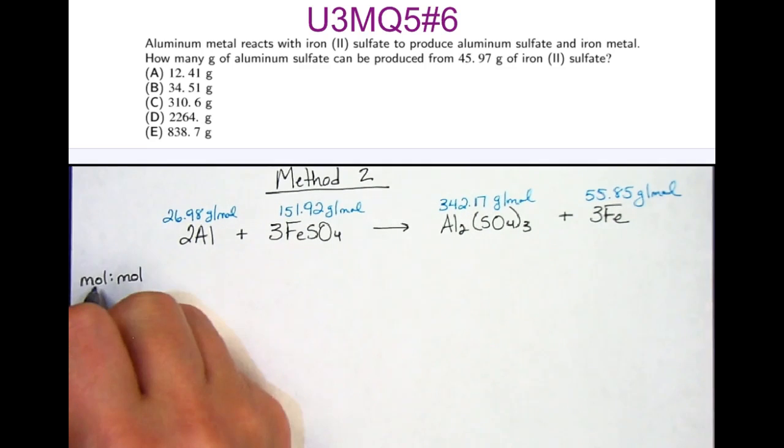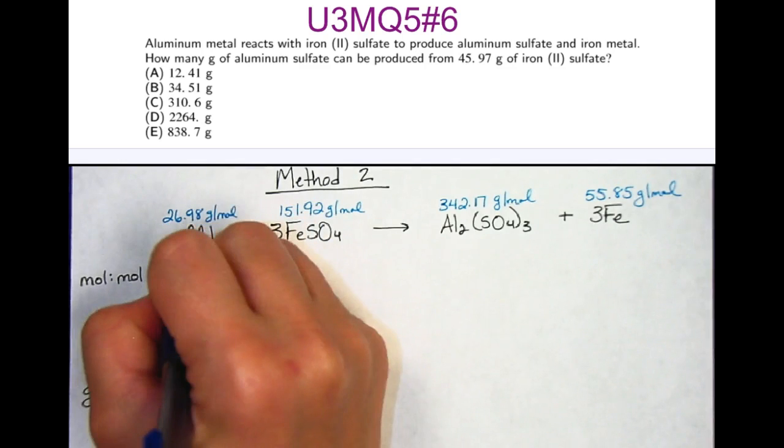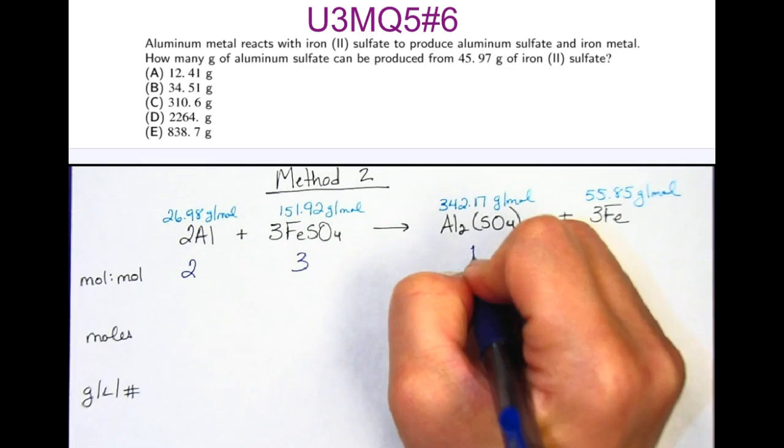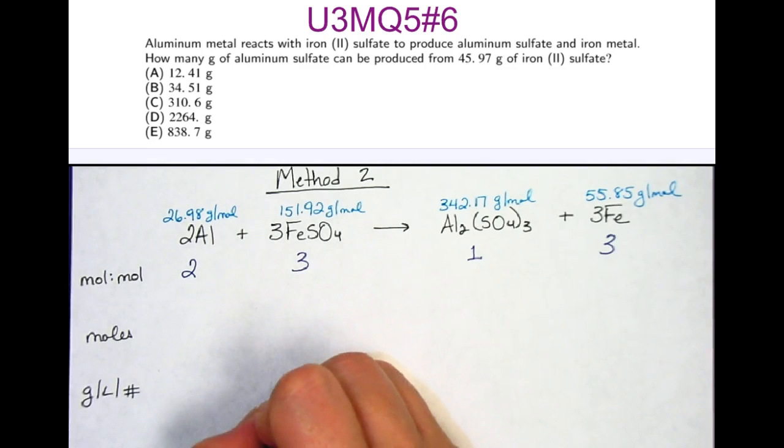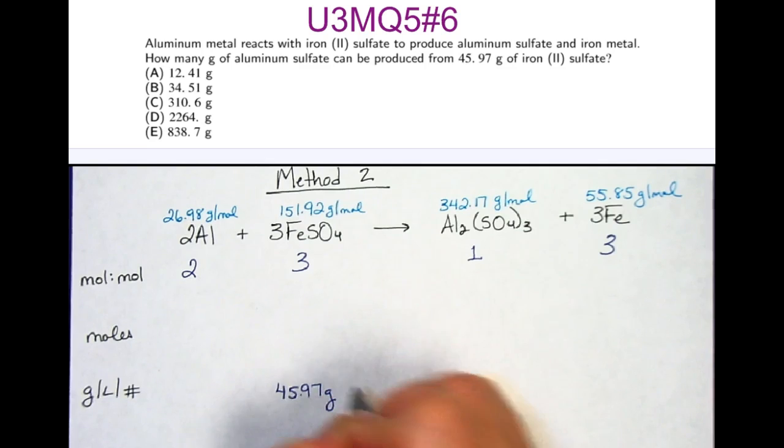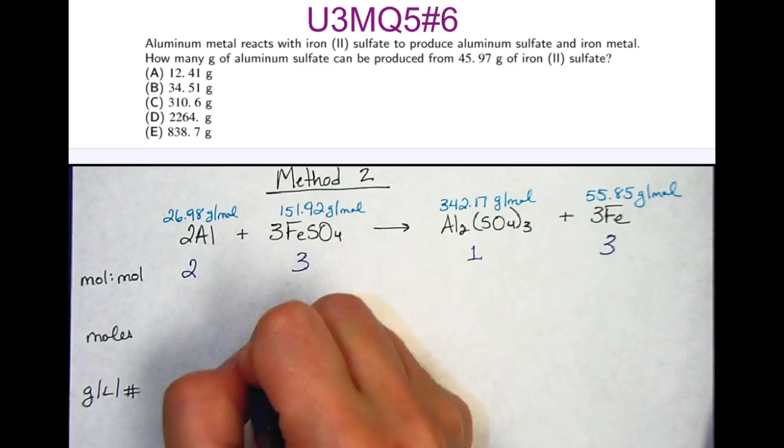Alright, now we'll fill out the chart. The mole ratio of everything in this equation is 2 to 3 to 1 to 3. We are given 45.97 grams of iron sulfate, and so from this piece of information, I can determine the moles by dividing 45.97 by the 151.92, and that gives me 0.303 moles.